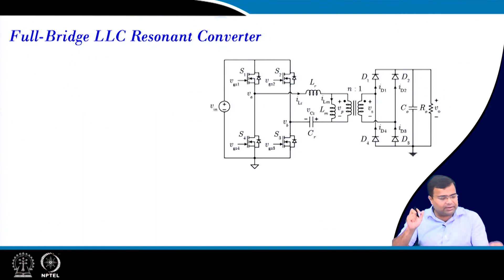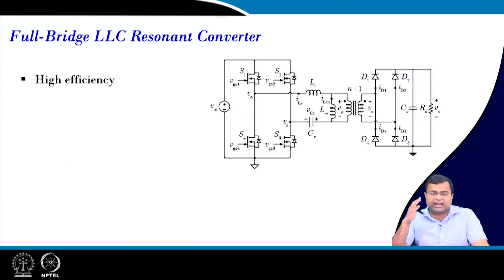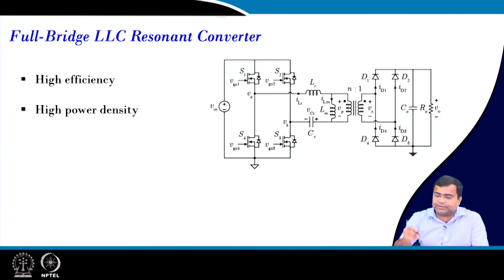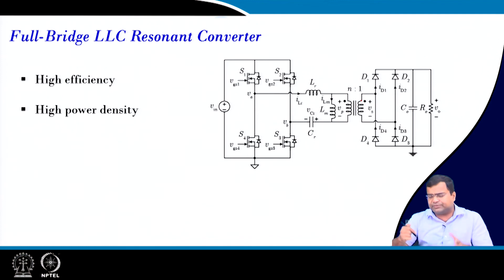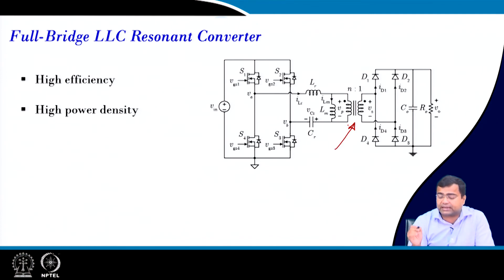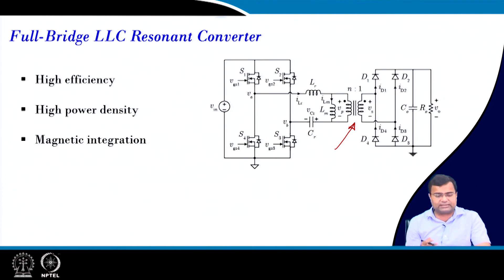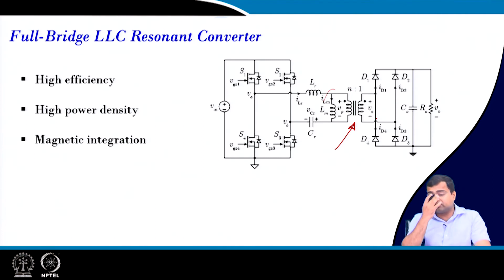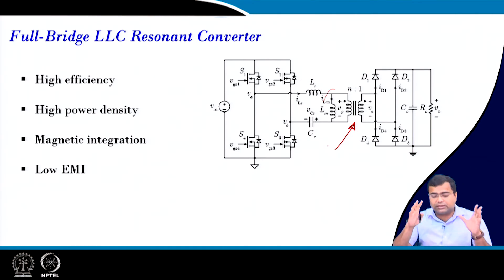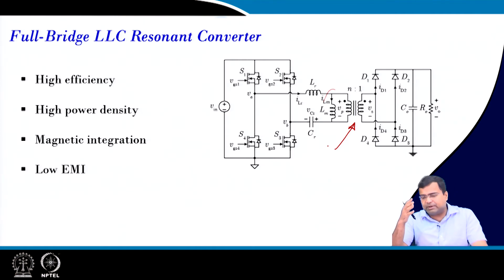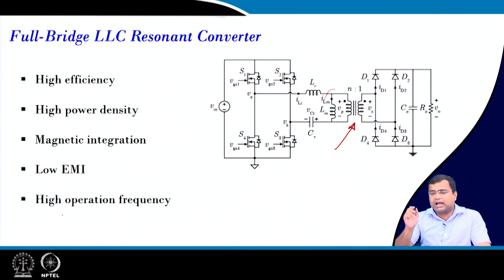In this course we will also cover the full-bridge LLC converter. The LLC converter offers high efficiency and high power density because it uses a resonant circuit, allowing operation at much higher switching frequency to reduce magnetics size. The magnetizing inductance Lm can be integrated into the transformer. It also offers low EMI due to the resonating operation, unlike hard-switching converters.